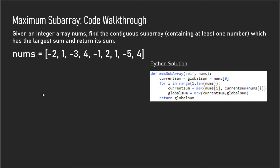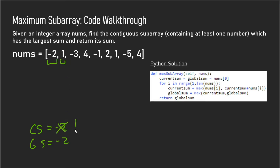If you didn't get it the first time, I'm going to go through the code as well as the algorithm once more. We start here with current sum and global sum equal to the first index — so current sum is negative 2 and global sum is also negative 2, inspecting just negative 2 as the subarray. For our next iteration we inspect 1, and we check to see if adding 1 to the current sum is greater than just 1 itself — it's not, so our subarray is just 1, and we update current sum and global sum.